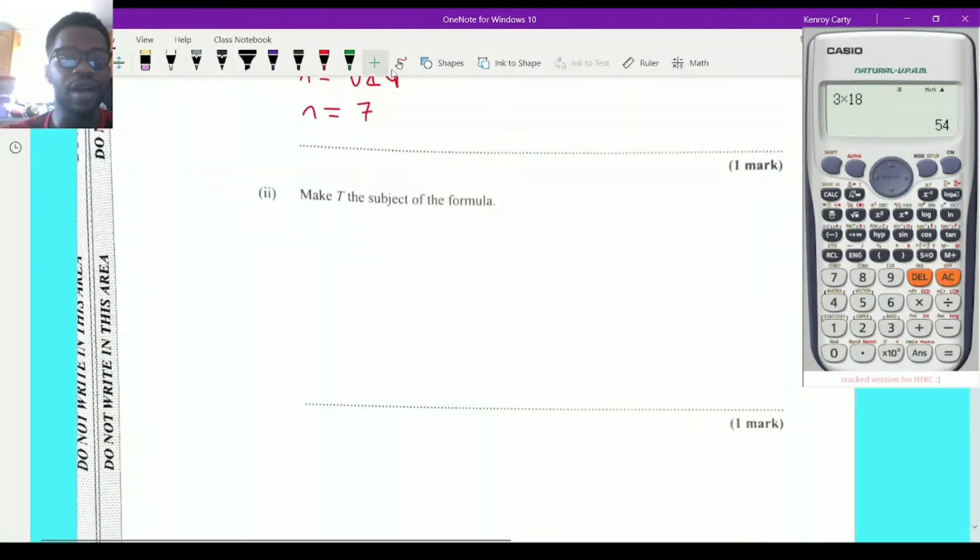Make t the subject of the formula. So once again, n is equal to the square root of t. I need to make t the subject of the formula, which means the formula needs to say t is equal to something. Now, how do I do that?